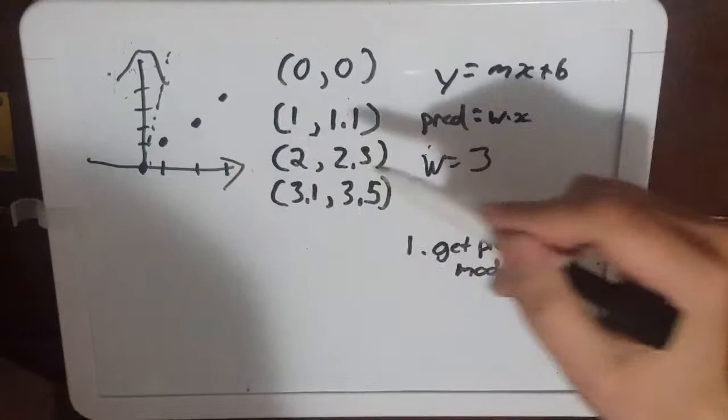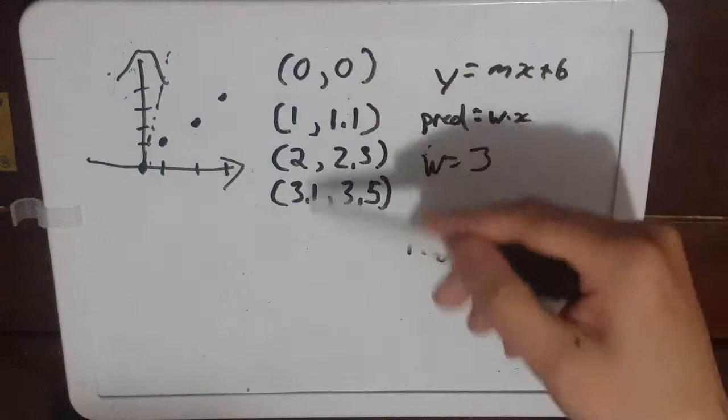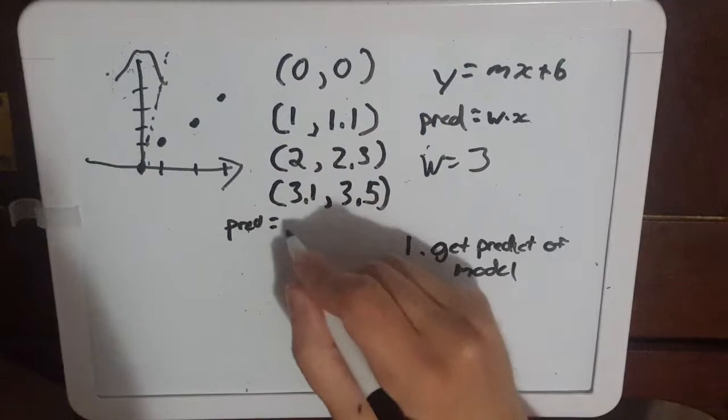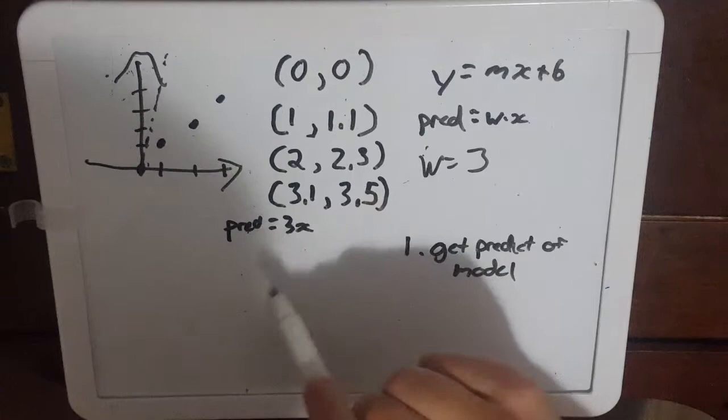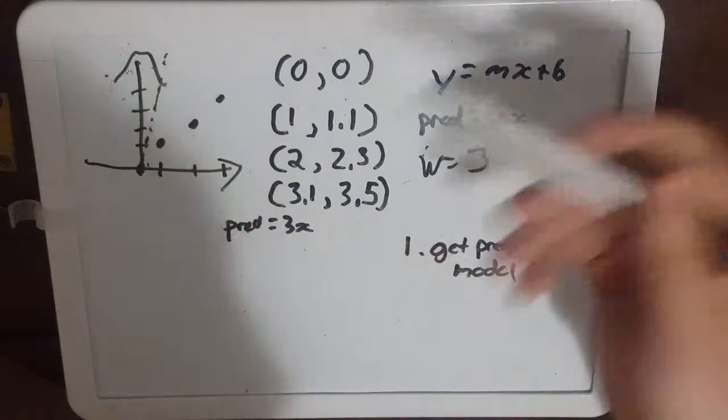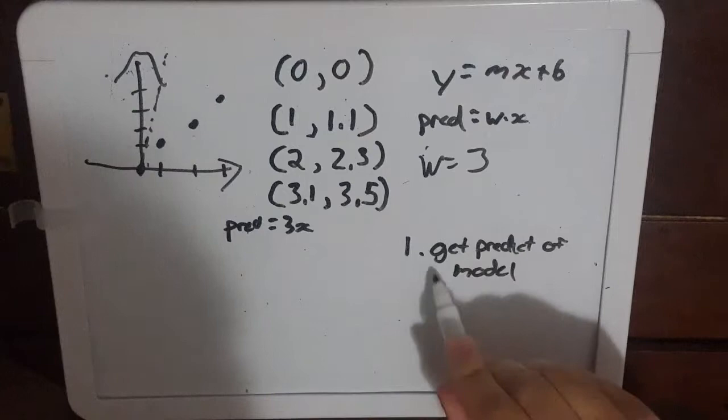Okay and then we got to get our prediction so we send in our input data and then we get our prediction out. So prediction equals 3x. We send zero, we get zero out. We send in one we get three. Two we get six. And then 3.1 times 3 is 9.3. That's how we get our prediction of the model.